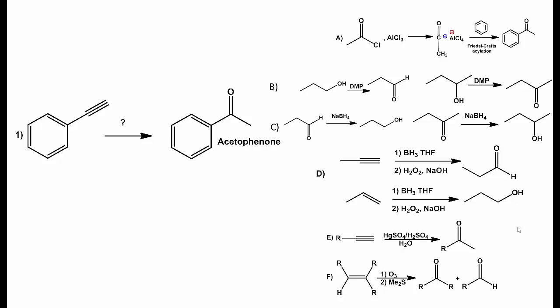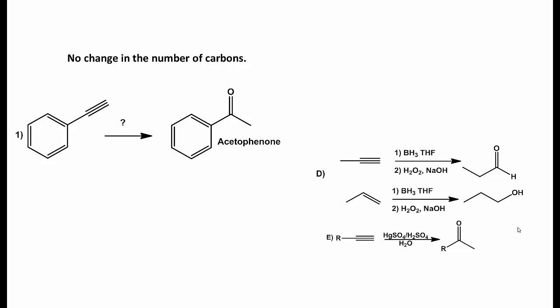The first substrate is a terminal alkyne, and to produce acetophenone we do not need to add or remove carbons. Therefore, we must use either a mercury-catalyzed hydration, which produces a methyl ketone, or hydroboration oxidation, which gives aldehydes. Our desired product is acetophenone and is a methyl ketone, so mercury-catalyzed hydration can be used. Therefore, the correct reagent is E.